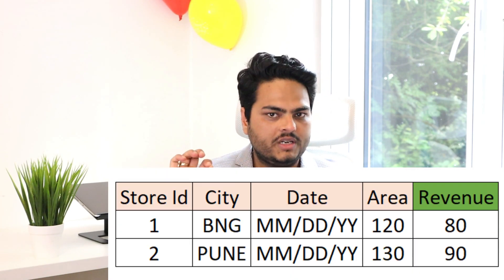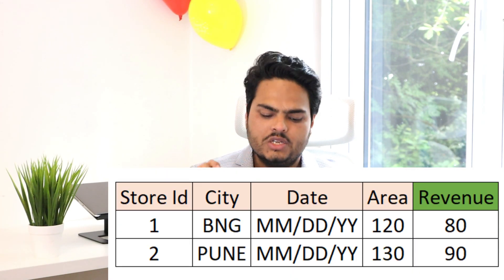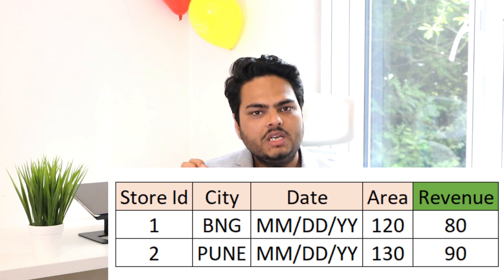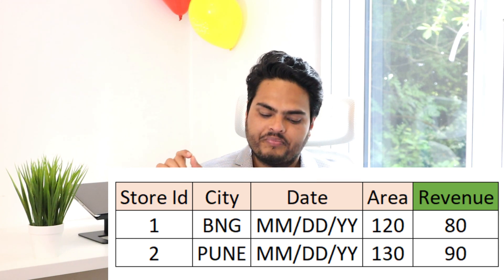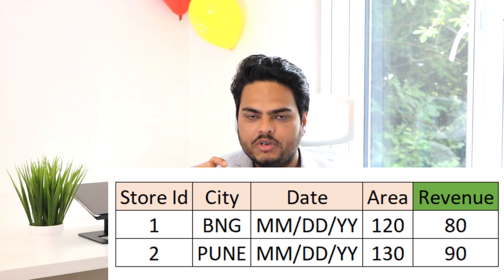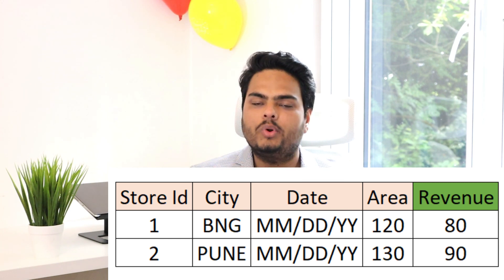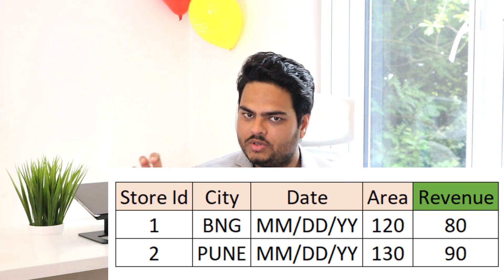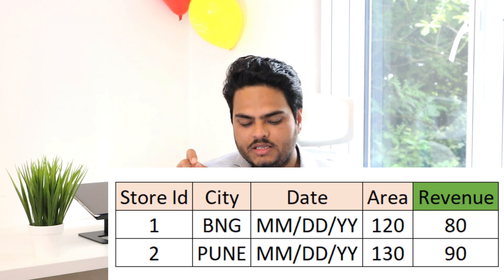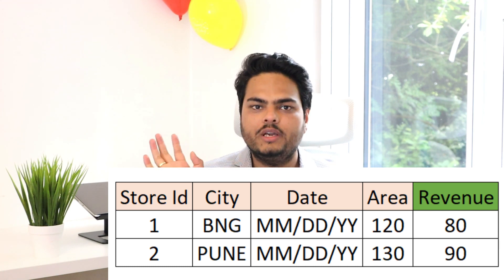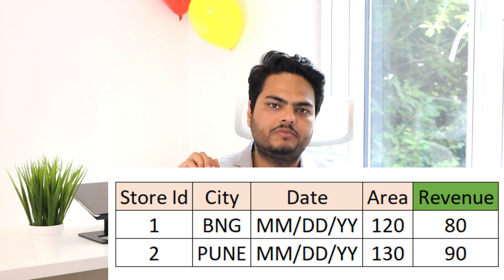Let's try to understand the main agenda of this video with a simple dataset. The data in front of you is a store dataset. In this data you can see store ID, the city in which that store is located, a particular date, the revenue on that date — which is your target column — and the area of that store.